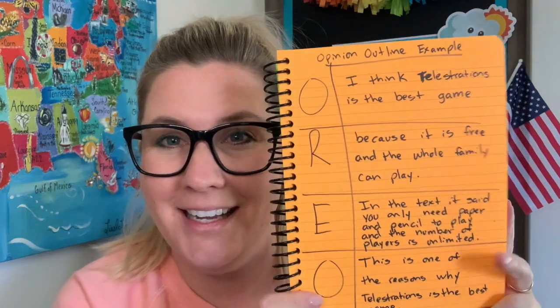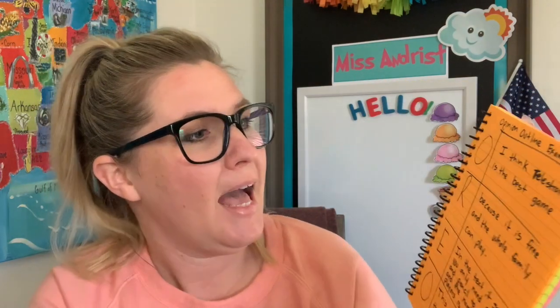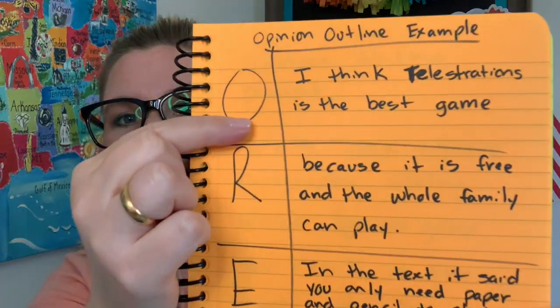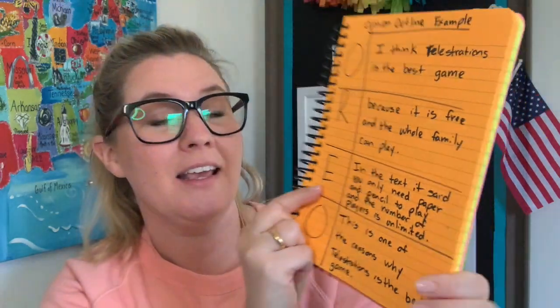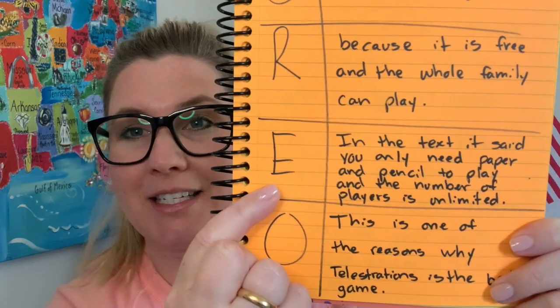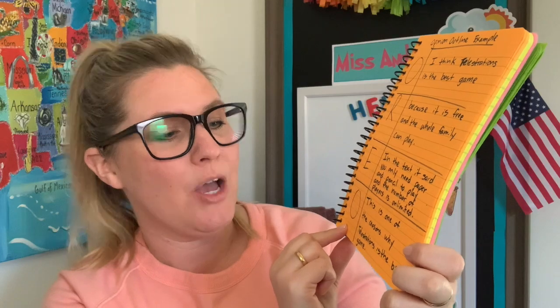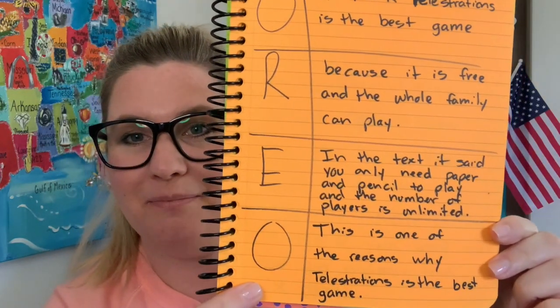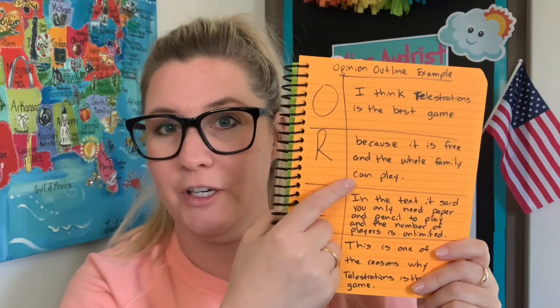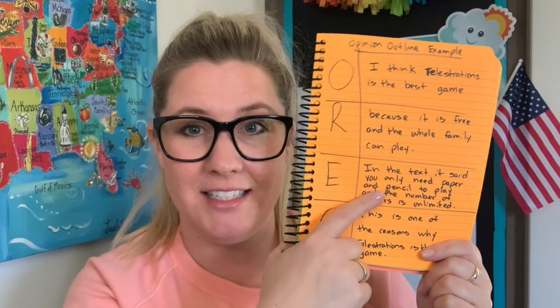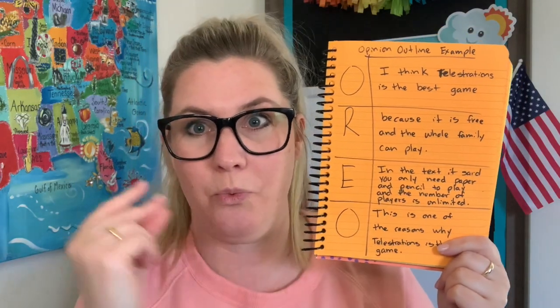Now you can fill that in based on what you read and what your opinion is. Here is my finished outline as an example. I think Telestrations is the best game because it is free and the whole family can play. In the text it said you only need paper and pencil to play and the number of players is unlimited. This is one of the reasons why Telestrations is the best game. See — I stated what I think, gave my reason, backed it up with something from the text, and restated my opinion at the end so my reader really knew what I thought.